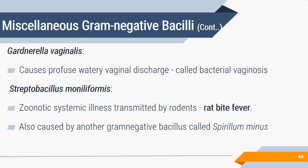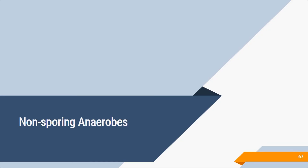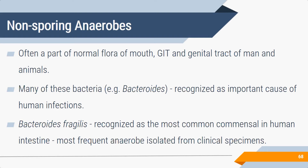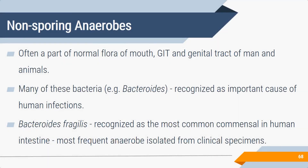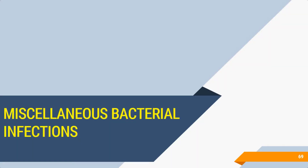Now discussing non-sporing anaerobes. Unlike Clostridium — the spore-forming anaerobe — these bacteria do not form spores. Most are normal flora of the mouth, gastrointestinal tract, and genital tract. The most important is Bacteroides fragilis, the most common anaerobe isolated from clinical specimens. It is a common cause of abscesses, mainly brain abscess, and is implicated in other infections as well.